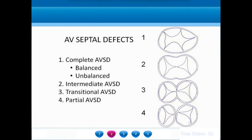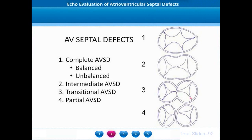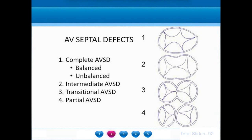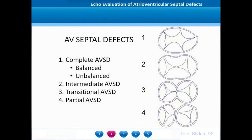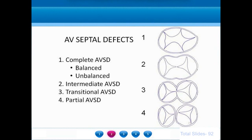Complete AV septal defects represent the classical prototype. They may be grouped as balanced and unbalanced defects depending on the amount of support given by both ventricles. Unbalanced defects are those in which one of the ventricles may be hypoplastic. Intermediate defects are relatively rare compared to complete defects. Transitional AV septal defects are also rare and are associated with restrictive inlet VSD with fairly well-formed two separate AV valve rings. Partial AV septal defects, also called primum atrial septal defects, are very common and have two well-separated AV valve rings.